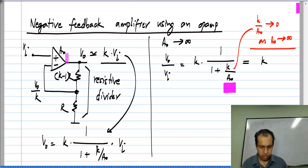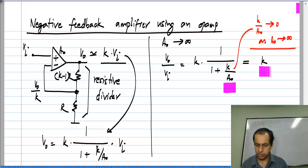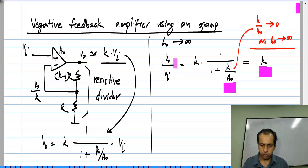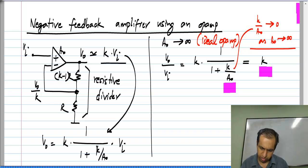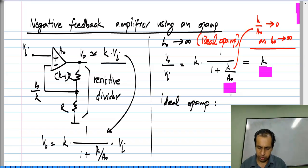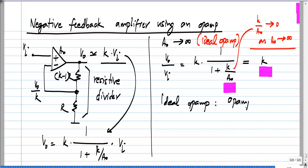If you recall, we had originally started with the goal of making an amplifier of gain k — that is, we wanted V_naught/V_i equal to k — and that is exactly what we get if A_naught is infinity. So we get exactly what we were looking for. An op amp whose gain A_naught is infinity is known as an ideal op amp; in other words, an ideal op amp is one where A_naught tends to infinity.